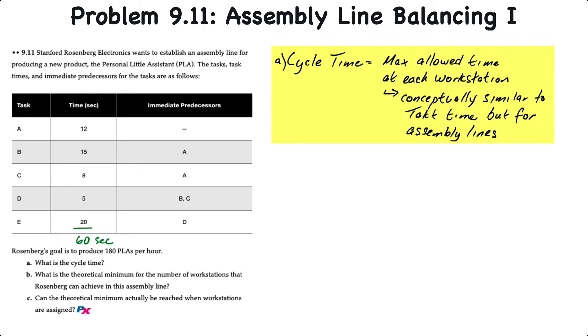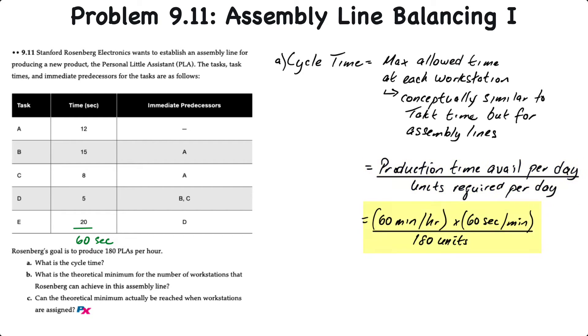For requirement A, cycle time. Cycle time is simply the maximum allowable time at each workstation, and it's conceptually similar to the takt time for work cells, but adapted to assembly lines. The formula for cycle time is the production time available per day divided by the units required per day.